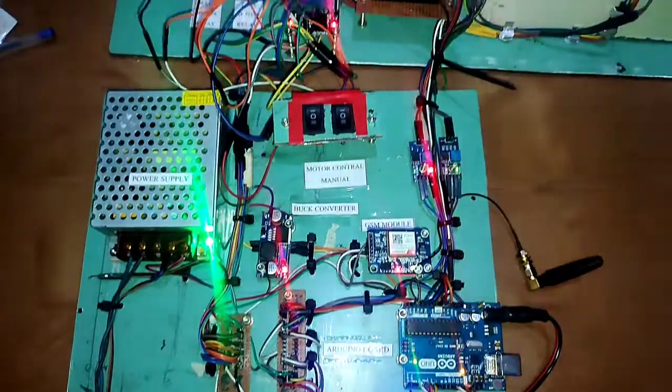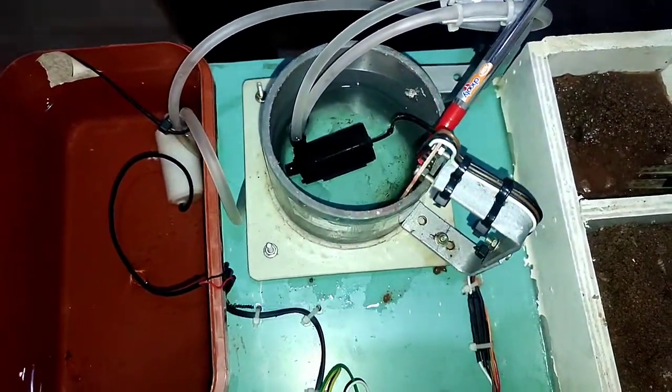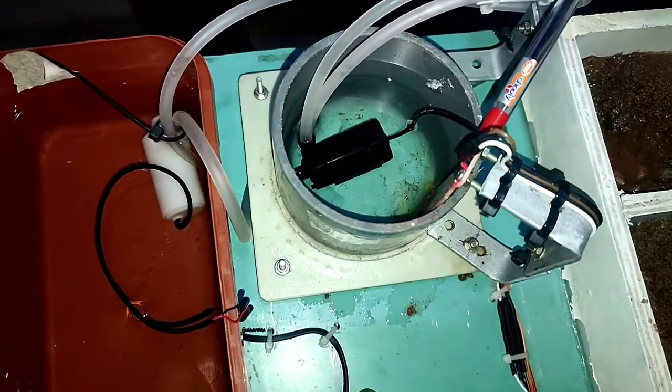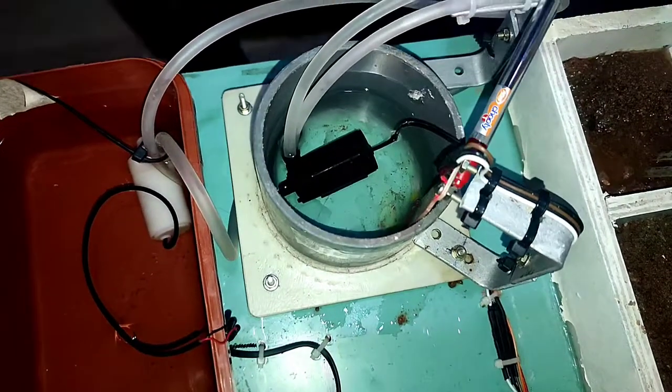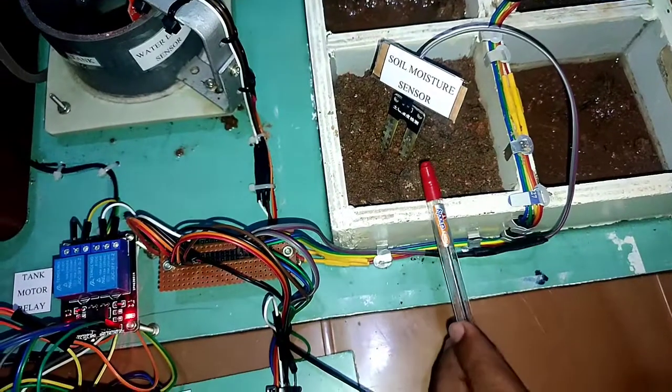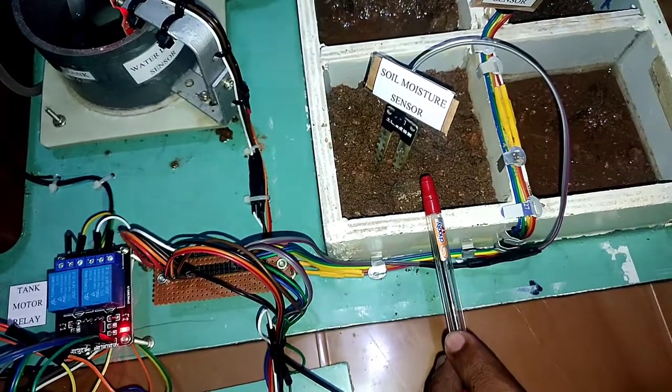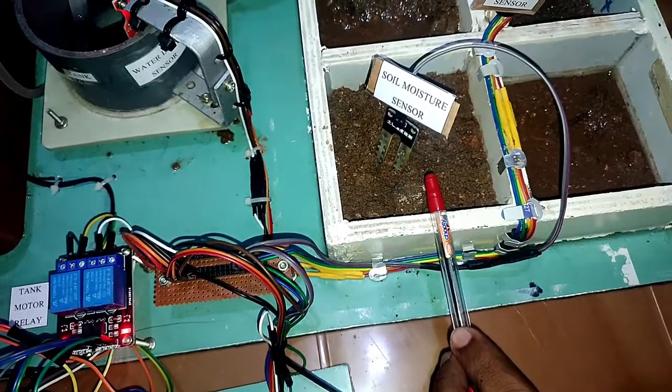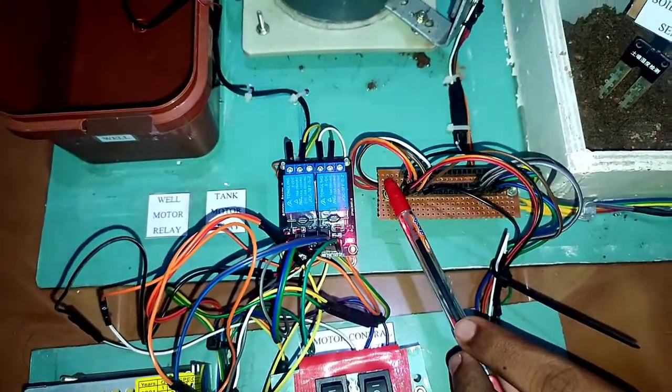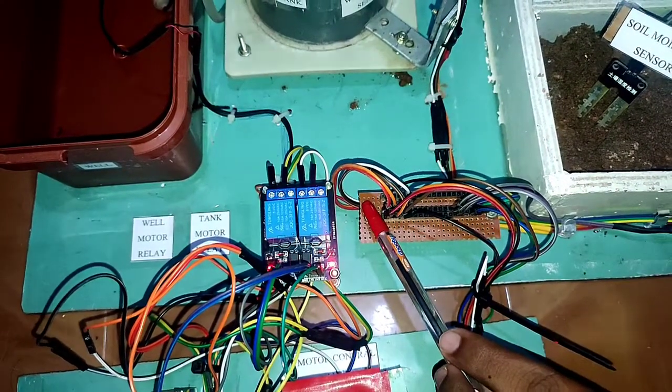In this case, considering the water level in the water tank, the water is given to the motor through relay whether to add water or not. The data provided by the soil sensor determines whether water is added to the soil or not. Considering this data too, two motors are activated through the two relays.